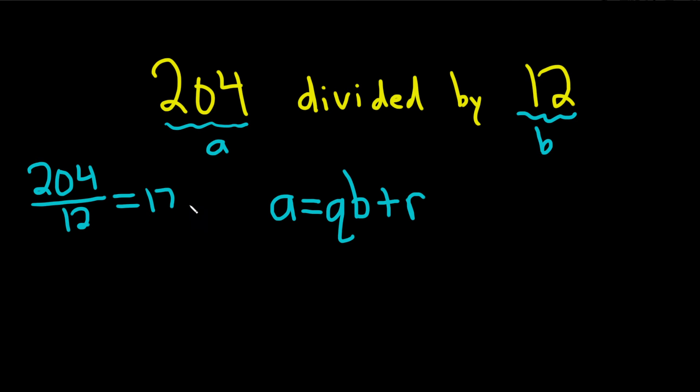Because there's no decimal place, we don't do any rounding. If you have something besides a zero, like 17.1 or 17.2, you round down. But because 12 goes into 204 evenly, there's no remainder. You just leave it alone.